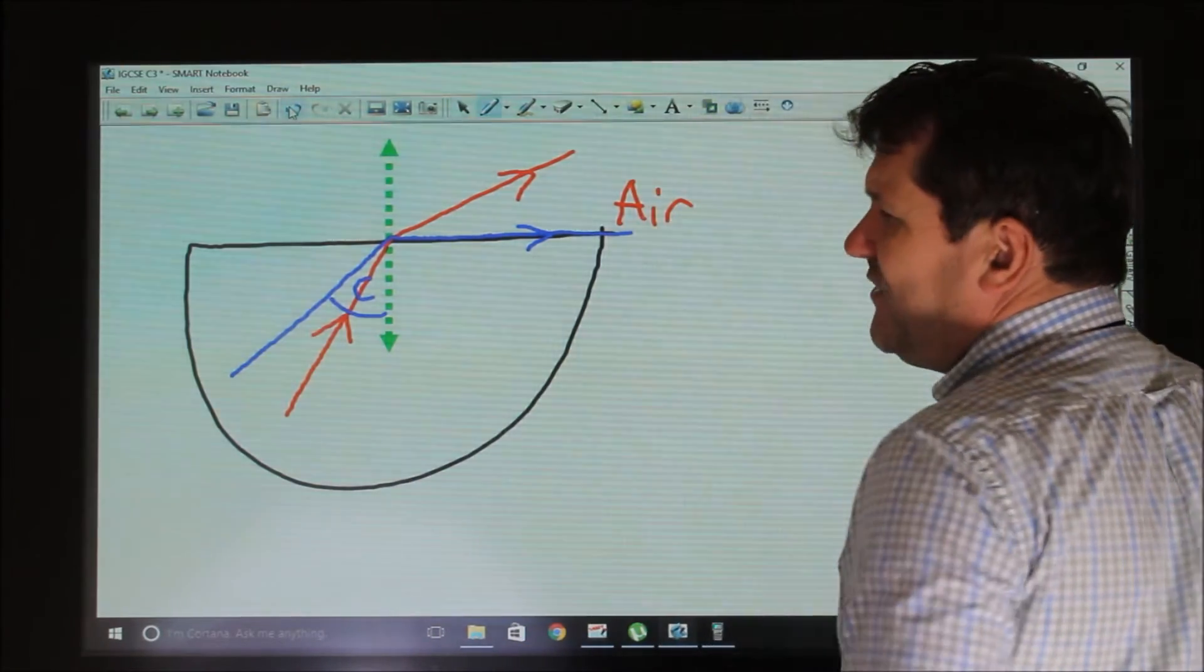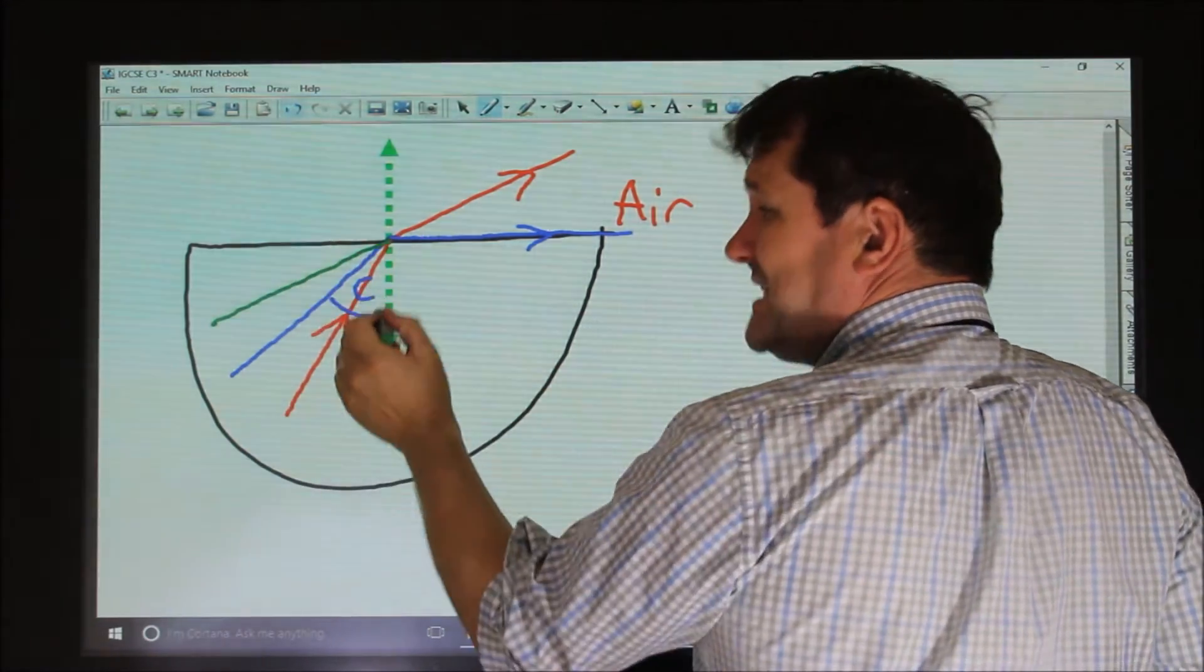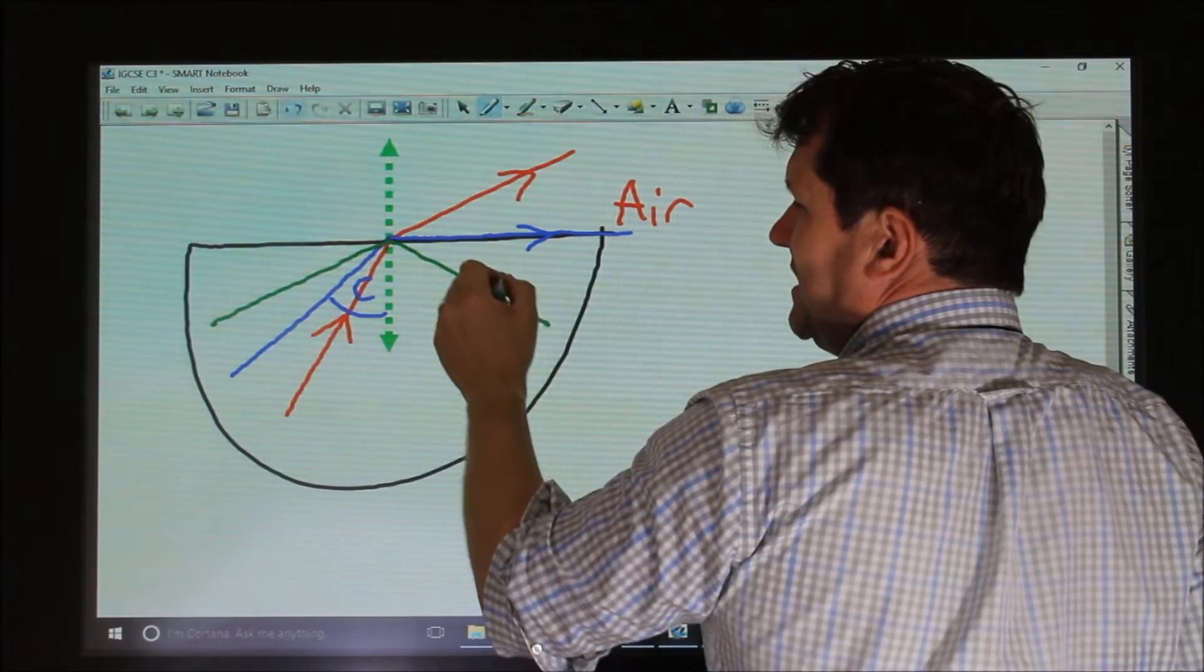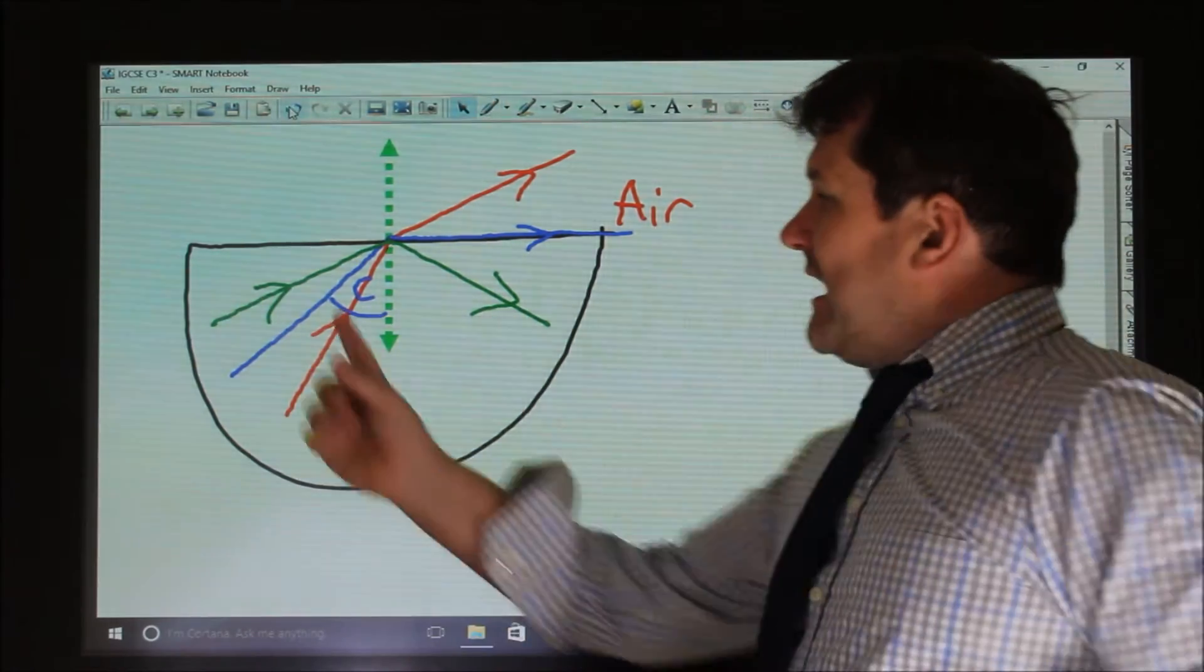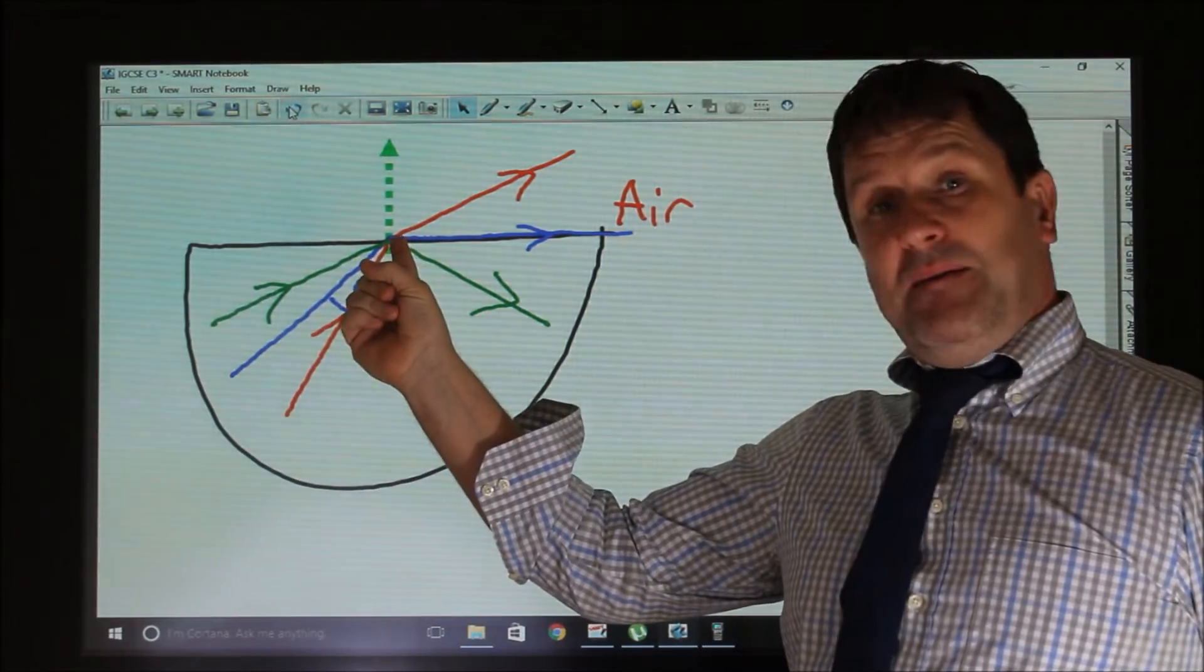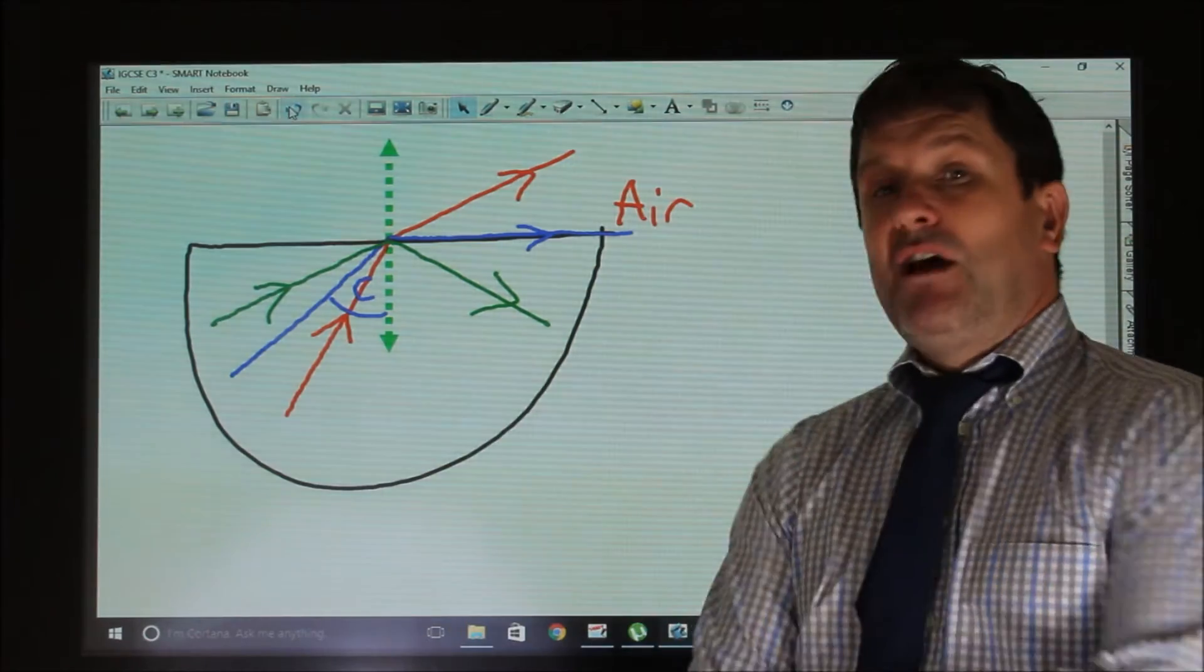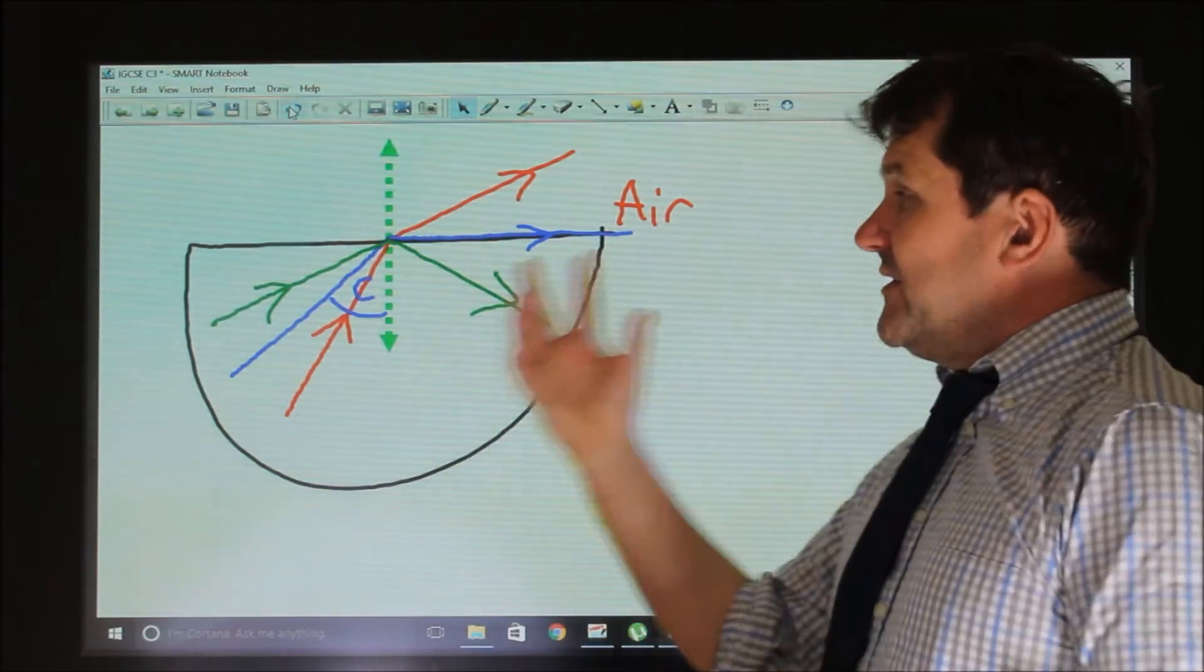Now if you have a beam where the angle is greater than the critical angle, you get total internal reflection. This ray of light will never leave this block here. It will just be totally internally reflected.